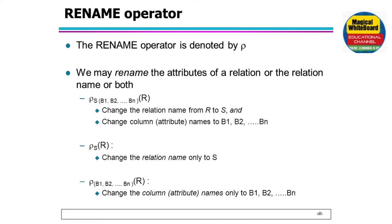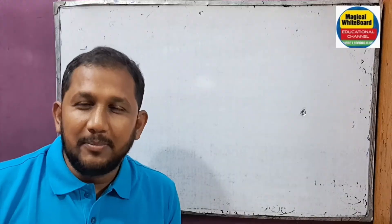We will use the second method — changing the column using Rho in DBMS. We have an example of the Rename Operator. The second method is Rho with column attributes B1, B2, ... BN. This is the concept of the Rename Operator in DBMS.